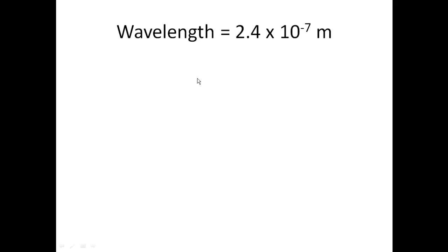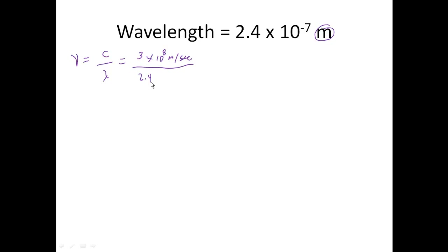Let's try this one. We have 2.4 times 10 to the minus 7th — you'll notice that you have two sig figs, so your answer is going to have two sig figs. First thing we can do, because we're given wavelength, we can calculate frequency. Frequency is the speed of light divided by the wavelength. Notice we're given meters right here, so I'm going to use 3 times 10 to the 8th meters per second so that I can cancel out my units. This is 2.4 times 10 to the minus 7th meters, so I'm going to be left with cycles per second. That's going to be 1.3 times 10 to the 15th cycles per second.